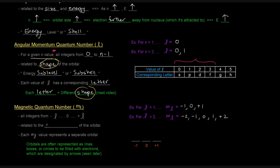The magnetic quantum number m sub l is related to the orientation of the orbital in 3D space. Each m sub l value represents a separate orbital. Orbitals can be represented as lines, boxes, or circles that can be filled with electrons, designated by arrows. For l equals 1, we have three m sub l values — negative 1, 0, and positive 1 — each with a corresponding orbital. Each orbital can hold a maximum of 2 electrons, represented by arrows pointing up and down.